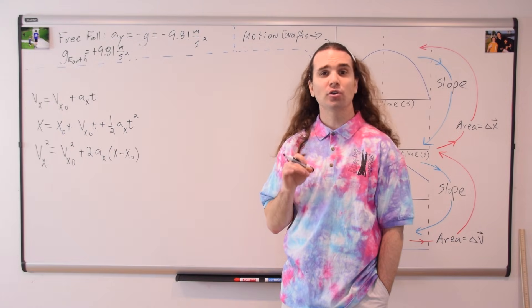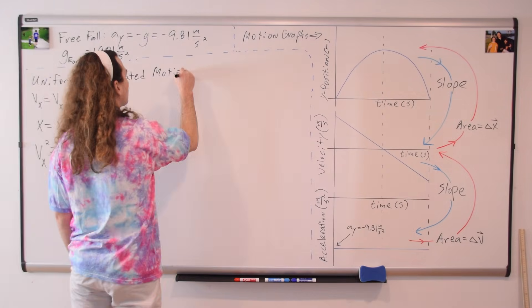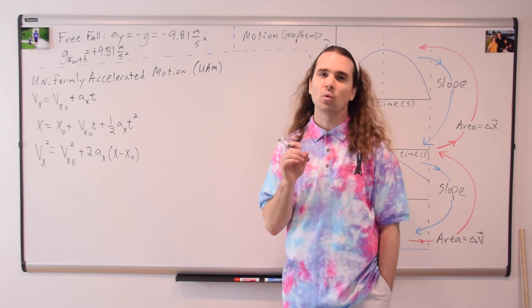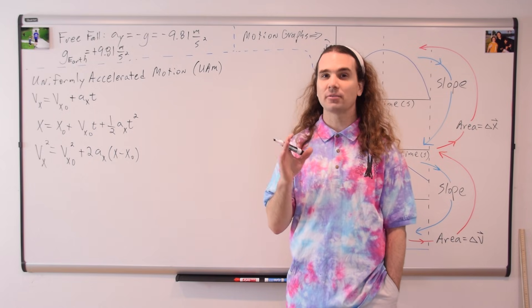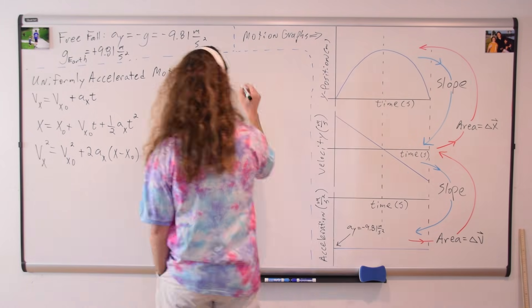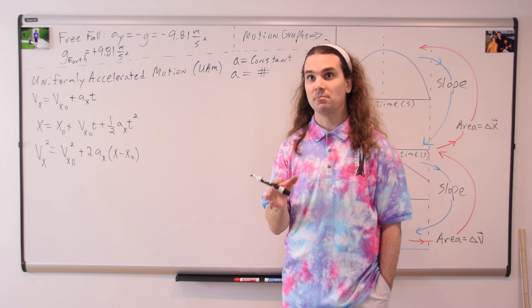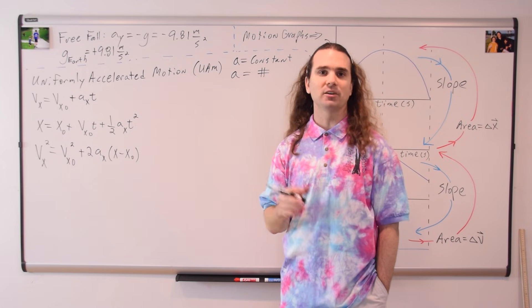These are your uniformly accelerated motion equations. These are the equations that describe the motion of an object when the acceleration of that object is uniform, when that acceleration is constant, when that acceleration equals a number. I actually prefer to use the change in time, the change in position, and specifically identify the initial and final points.